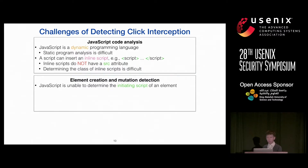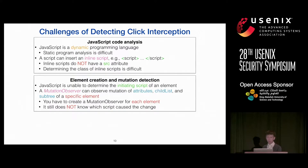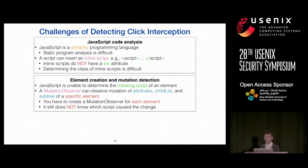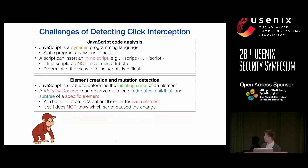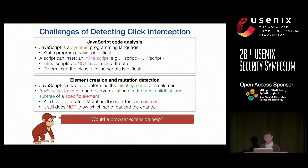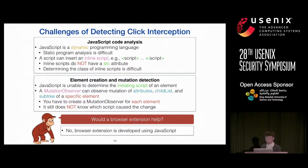In the browser, we have access to a mutation observer object that allows tracking changes to a particular element — but it still doesn't tell you which script caused the change. To watch the whole page, you'd have to create a mutation observer for each element. Some people may ask why not use a browser extension — that's possible, but browser extensions for Chrome are also mostly developed in JavaScript and have the same limitations.